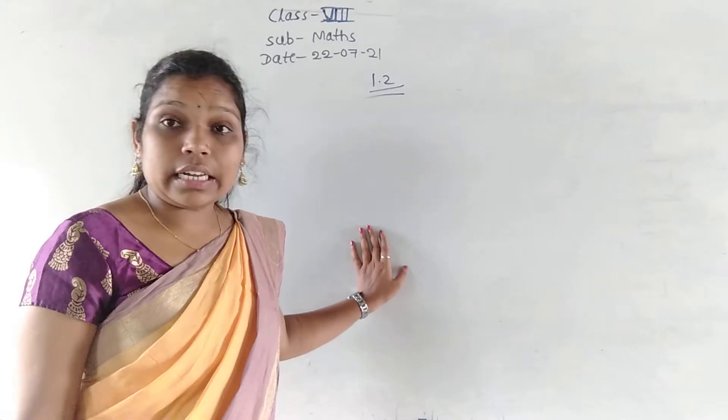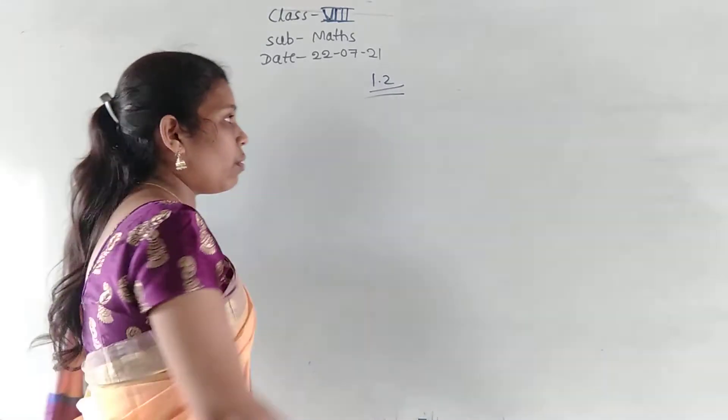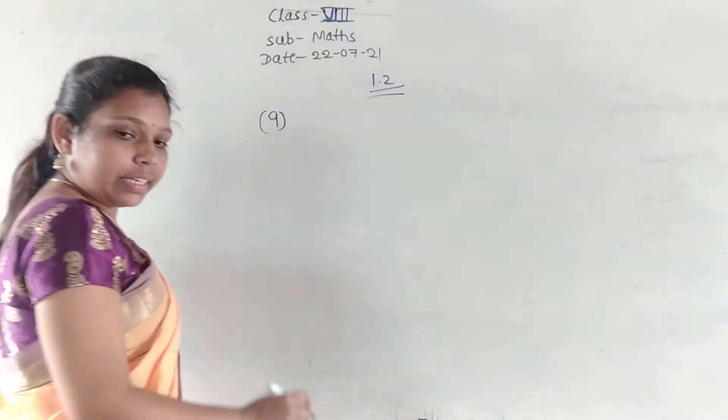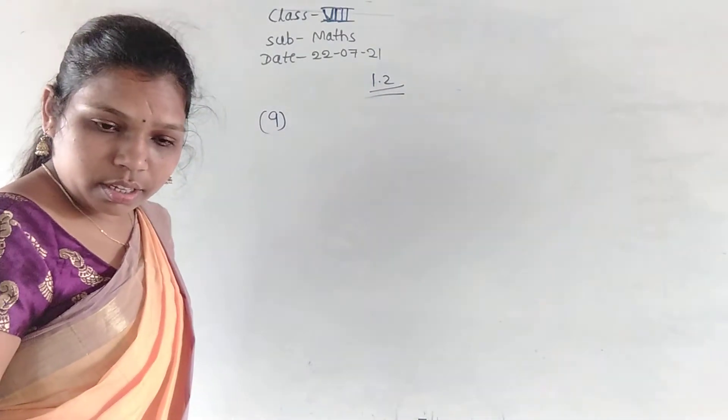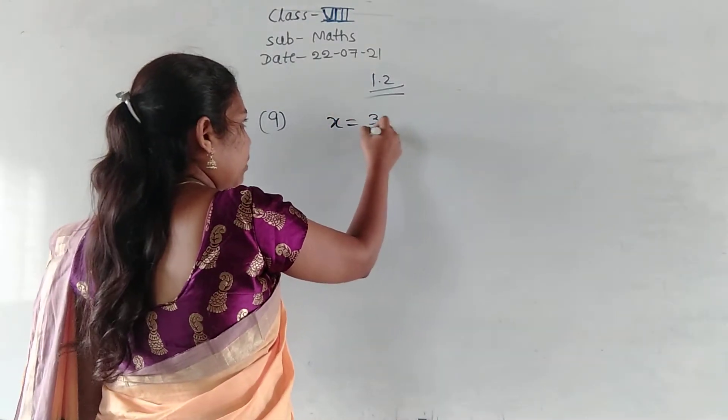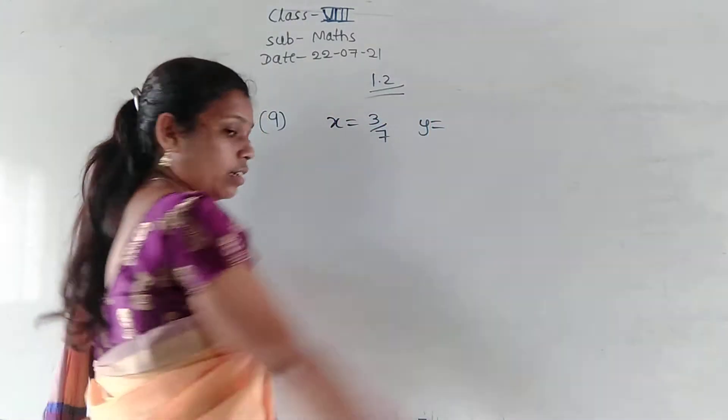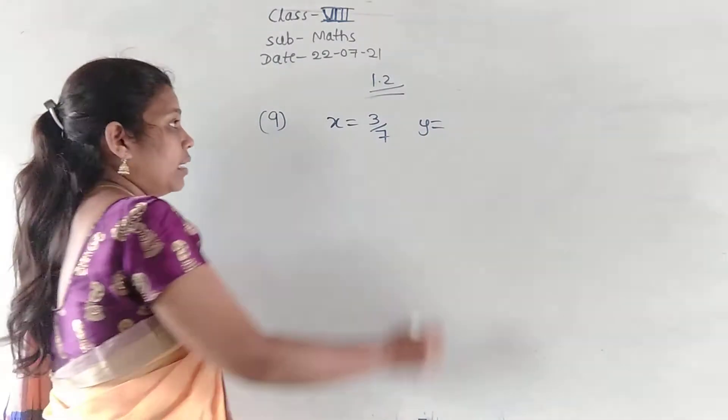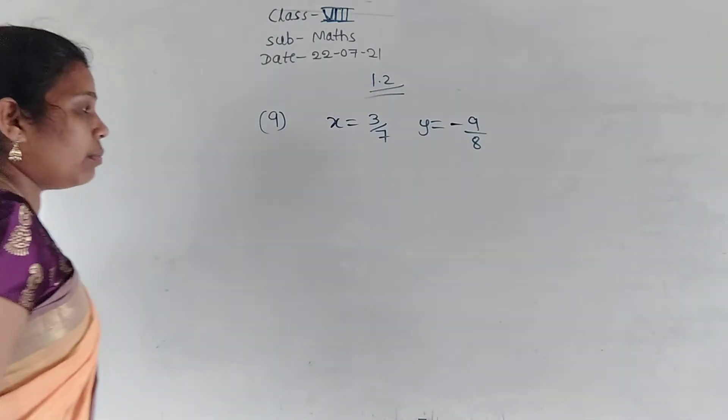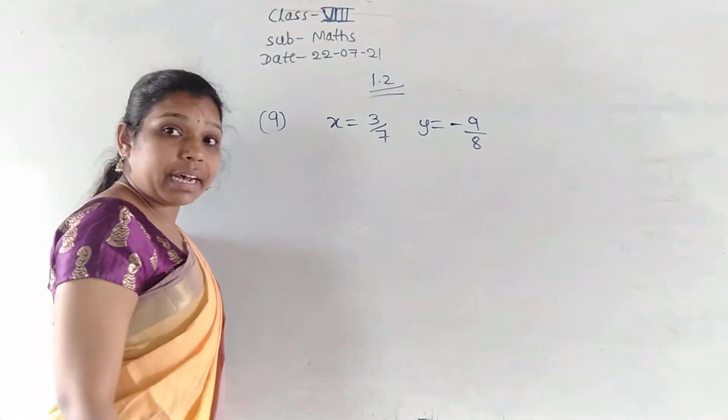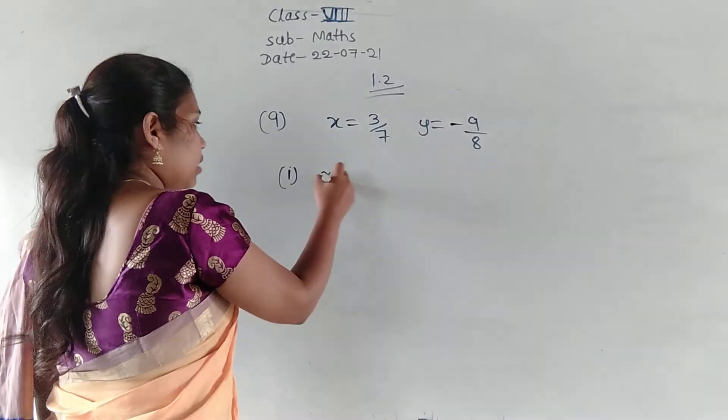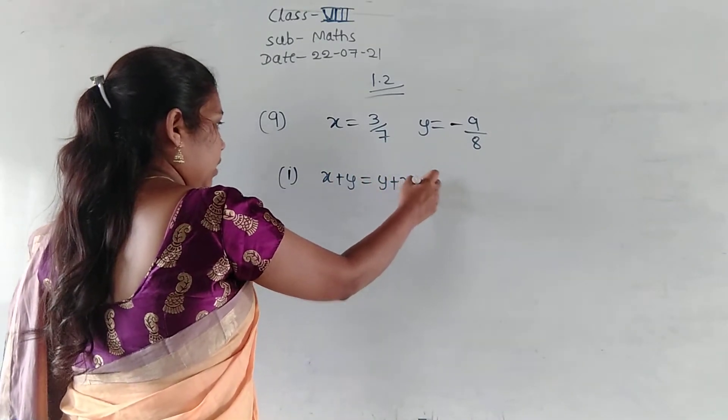Now we will begin with the 9th problem, Exercise number 1.2, 9th problem. First question we have given here. That is here we have given an x value is equal to 3 by 7 and y value is minus 9 by 8. Now, check the first one. That is x plus y is equal to y plus x.